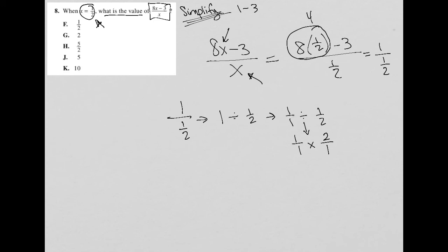And therefore, 1 over 1 times 2 over 1 is what we get. And that is equal to 2 because 1 times 2 is 2, and 1 times 1 is 1, and 2 over 1 is just 2.